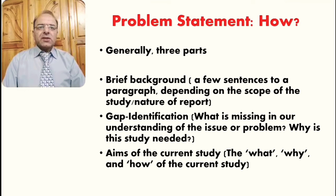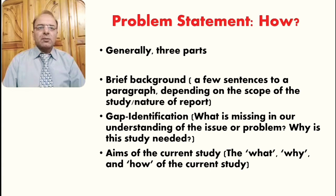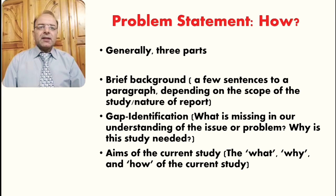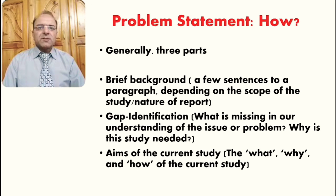After giving a brief background to the issue being explored, the second part is the gap identification: what is missing in our understanding of the issue or the problem? In other words, why is this study needed? That is a question also responded to in the problem statement. Then, the third part is the aims of the current study — the what, why and how of the current study. So, you give a brief background, then identify the gap explaining why this particular study is needed, and then state the aims of the current study — what we will get at the end of the study.